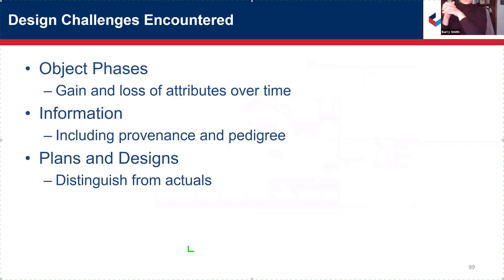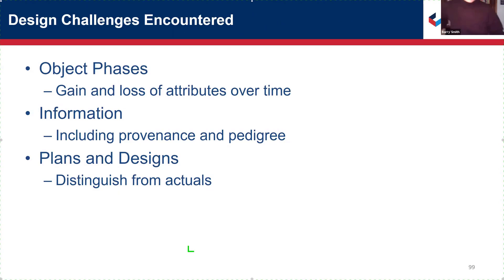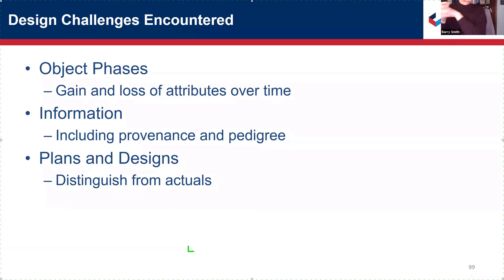Various problems arise as soon as you start using a highly general mid-level ontology in this way. Attributes change over time — how do you deal with things like ages? People get older. How do you deal with that in such a way that you always have data which is up to date and correct? And then there is a problem of keeping track of provenance: how do you know where specific kinds of data come from? And there is also a big problem which I want to deal with in the final couple of minutes.